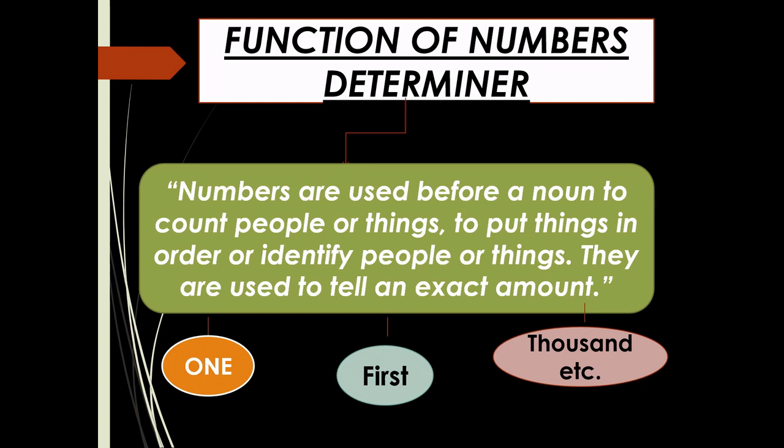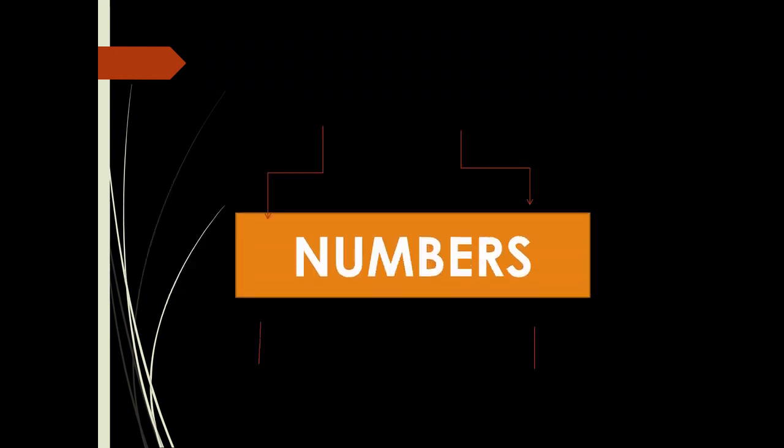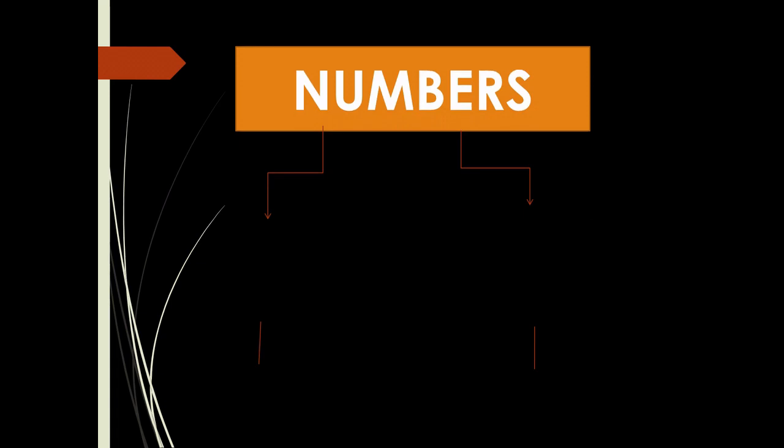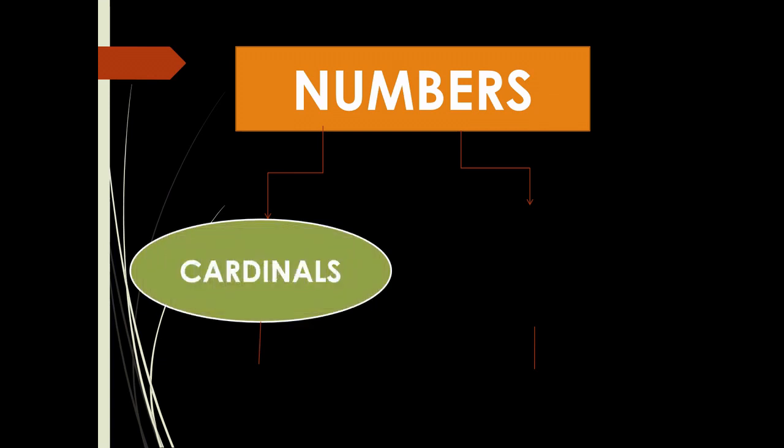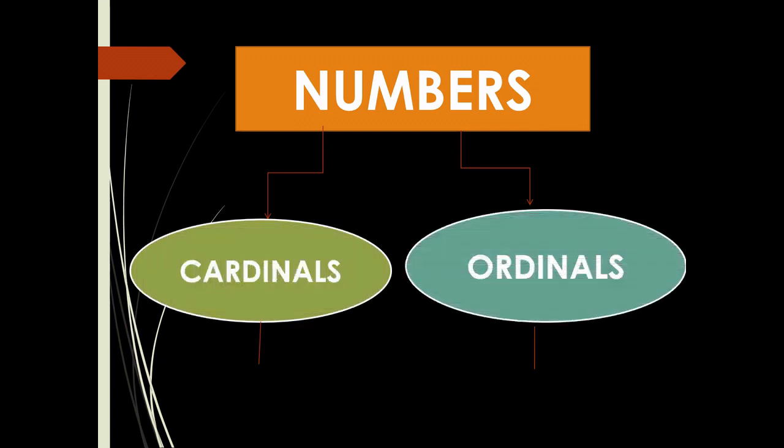Numbers are further divided into two parts: cardinal numbers and ordinal numbers. Cardinal numbers show quantity, while ordinal numbers show order. For example, 1, 2, 100, 1000, etc., are cardinal numbers; and 1st, 2nd, 3rd, 4th are ordinal numbers.